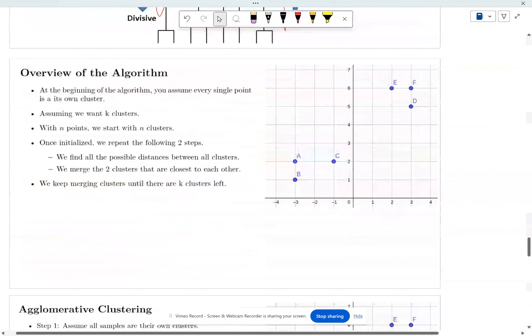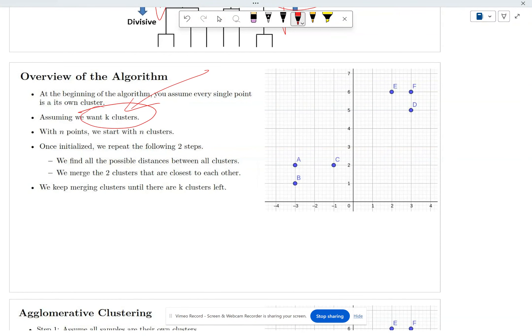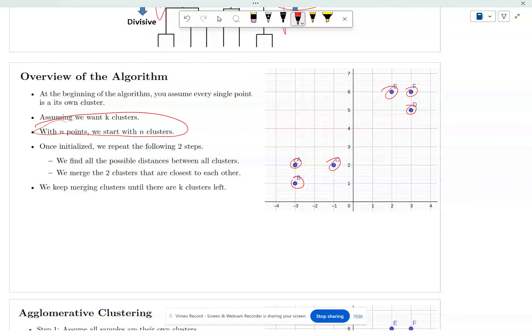So the overview of the algorithm again is really really easy. You want to start again with assuming that you have k clusters. Once you have k clusters with n points we assume every single point is a cluster. So now we have n clusters. And then we over time merge them, and by merging them we slowly form the cluster. That's the general idea.